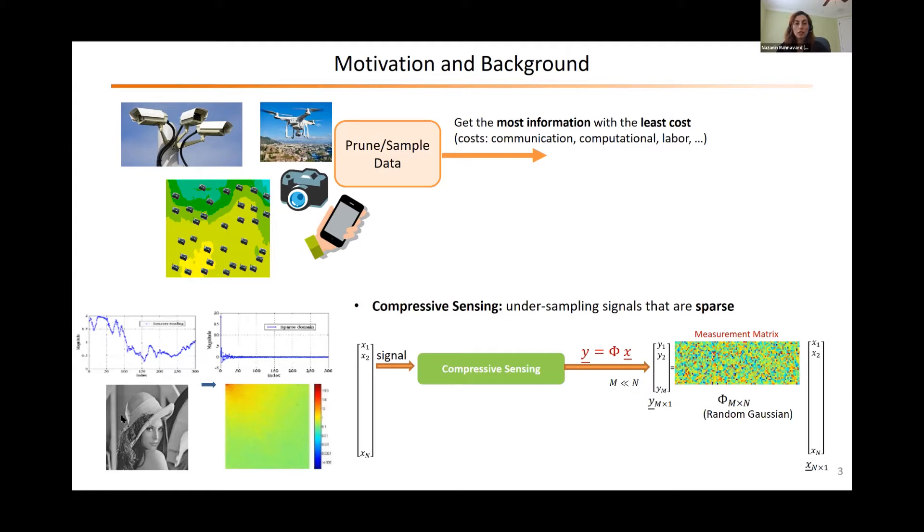For example, if you look at the temperature across the field, or if you look at images, there are some transformations that we can convert these signals to sparse signals, as we can see here.